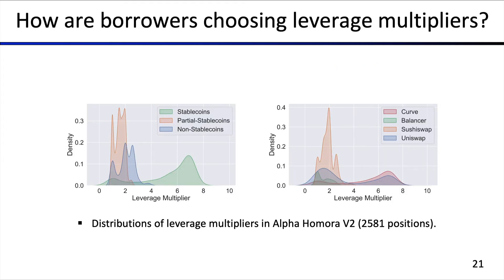Looking at how borrowers choose leverage multipliers, we plotted results based on whether positions are stablecoins, partial stablecoins, or non-stablecoins. Stablecoins are any pair of stable assets; partial stablecoins have one stable and one non-stable coin; and non-stablecoins are just non-stable tokens. The distribution shows stablecoin leverage multipliers are significantly higher, while partial and non-stablecoin leverage multipliers are more or less the same — users choose similar multipliers as soon as a non-stable coin is in the basket.